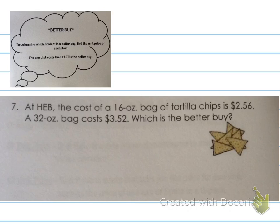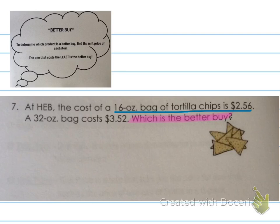At HEB, the cost of a 16-ounce bag of tortilla chips is $2.56. A 32-ounce bag costs $3.52. Which is the better buy? So we need to go back through and figure out what information is important. We need to know that the 16-ounce bag is $2.56, and the 32-ounce bag is $3.52. So first, let's write these as ratios.